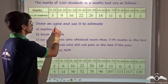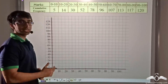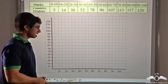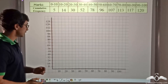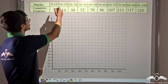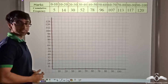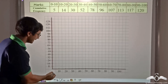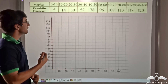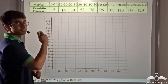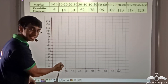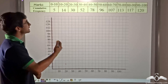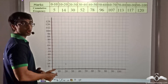Now we have to draw an ogive. I have taken the class distribution — the variates — on the x-axis and the cumulative frequency on the y-axis. I will start plotting. For the first class 0 to 10, the cumulative frequency is 5, so I plot 5, which lies somewhere between 0 and 8. For the class 10 to 20, I plot 14, which lies between 8 and 16. I will continue plotting cumulative frequencies for all the classes.